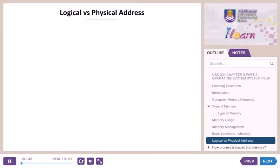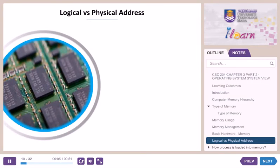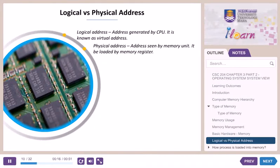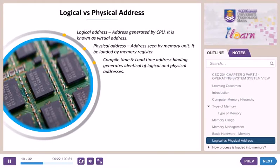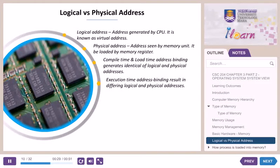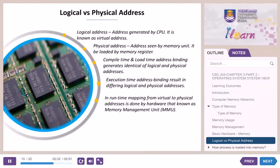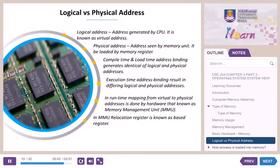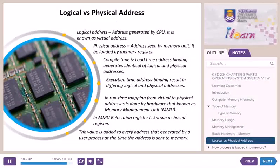Logical versus physical address. In a computer system there are two types of addresses. Logical address is the address generated by the CPU, also known as the virtual address. Physical address is the address seen by the memory unit and is loaded by the memory register. Compile time and load time address binding generates identical logical and physical addresses. Execution time address binding results in differing logical and physical addresses. At run time, mapping from virtual to physical addresses is done by hardware known as the Memory Management Unit (MMU). In MMU, the relocation register is known as the base register, and its value is added to every address generated by a user process at the time the address is sent to memory.